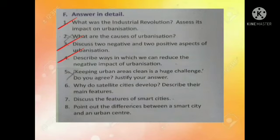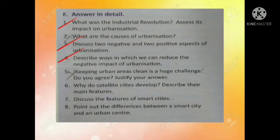Fourth point: describe ways in which we can reduce the negative impact of urbanization. First point: opportunities for employment and education should be created in rural areas. Second point: rural areas must be equipped with basic amenities like water, electricity, etc. Third point: better management and planning in urban areas.